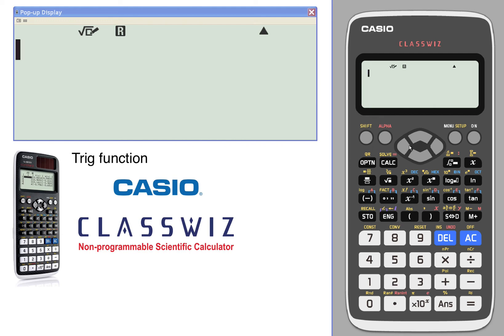Let's have a look at trig functions. We're currently in the calculate menu. We're going to take a look at trig functions. We're currently in radian mode. That's what the little r at the top of the screen means.